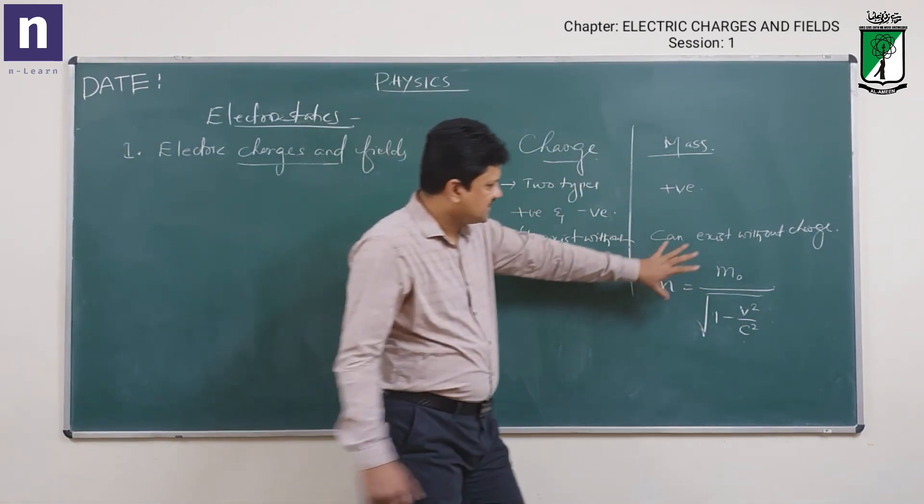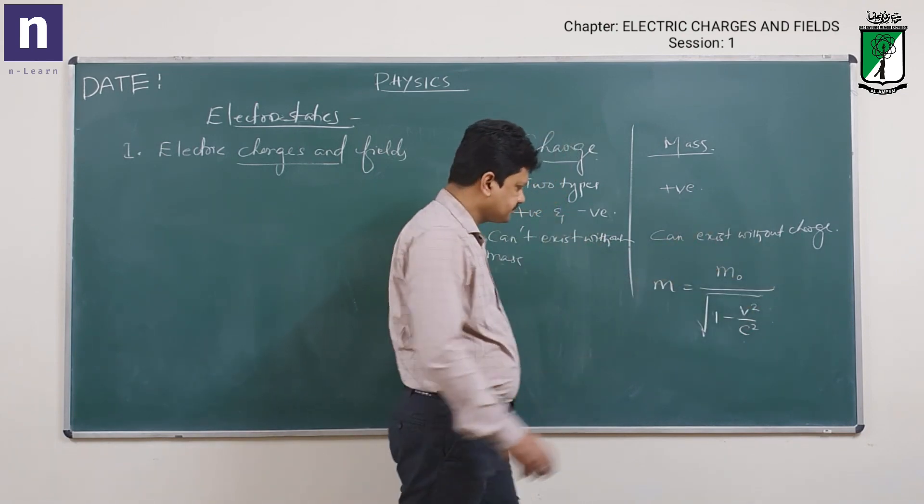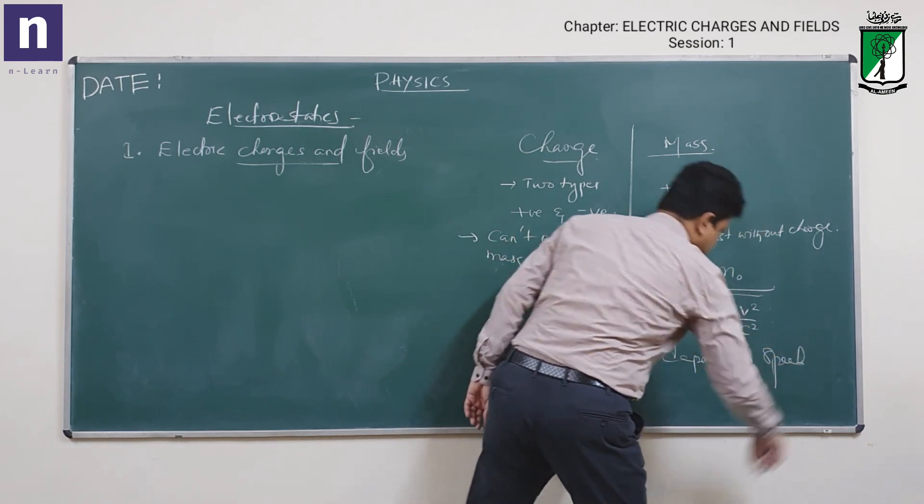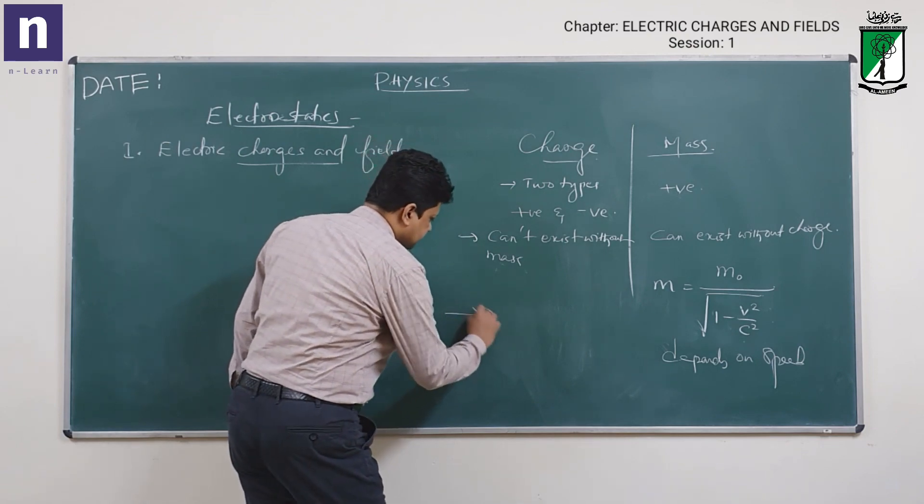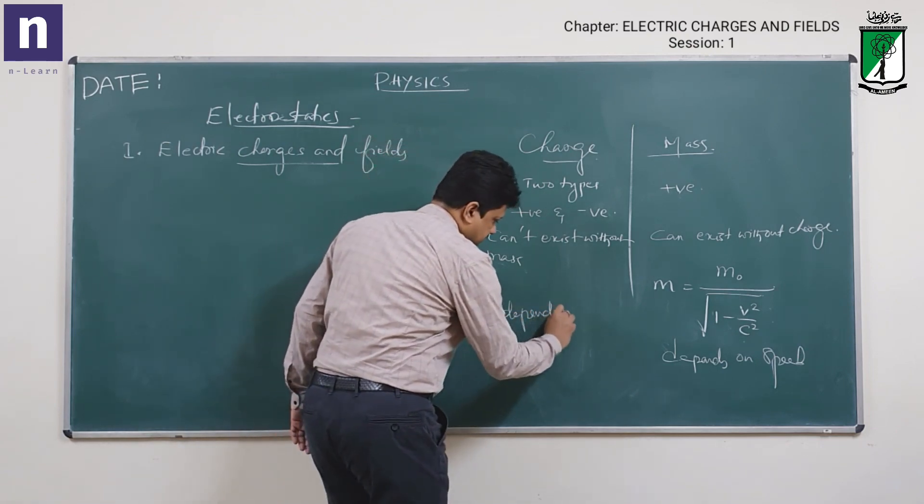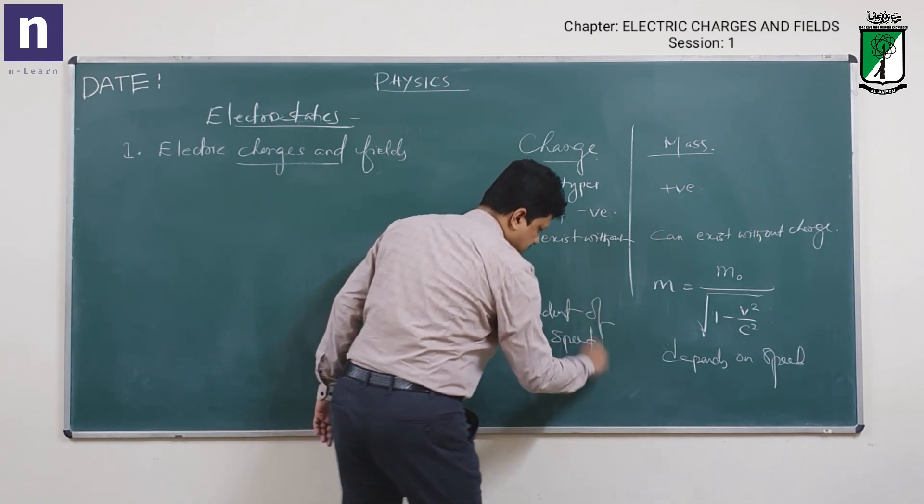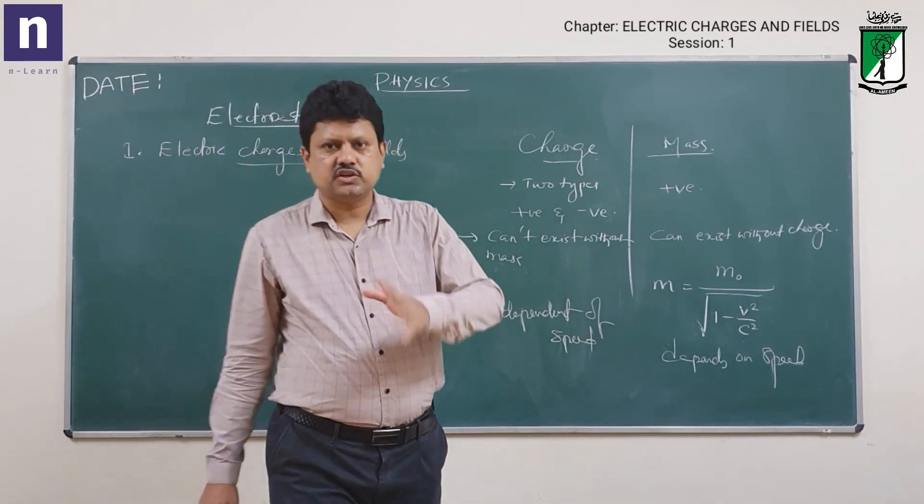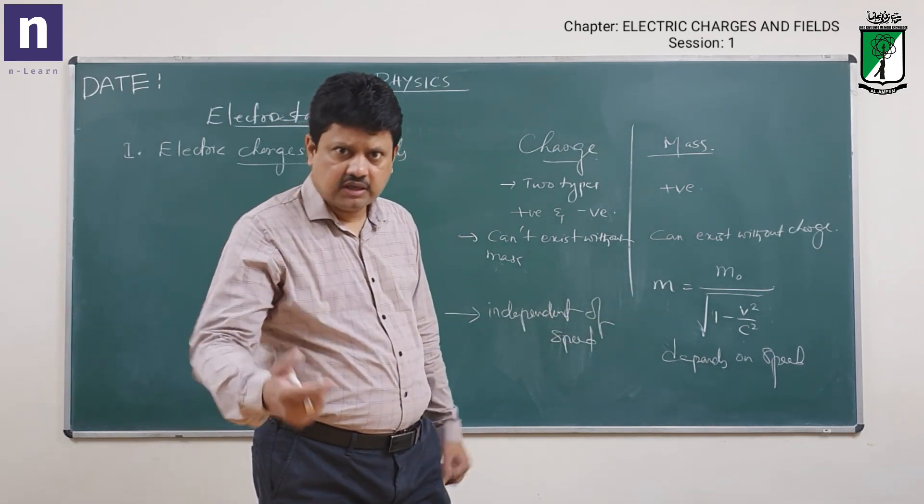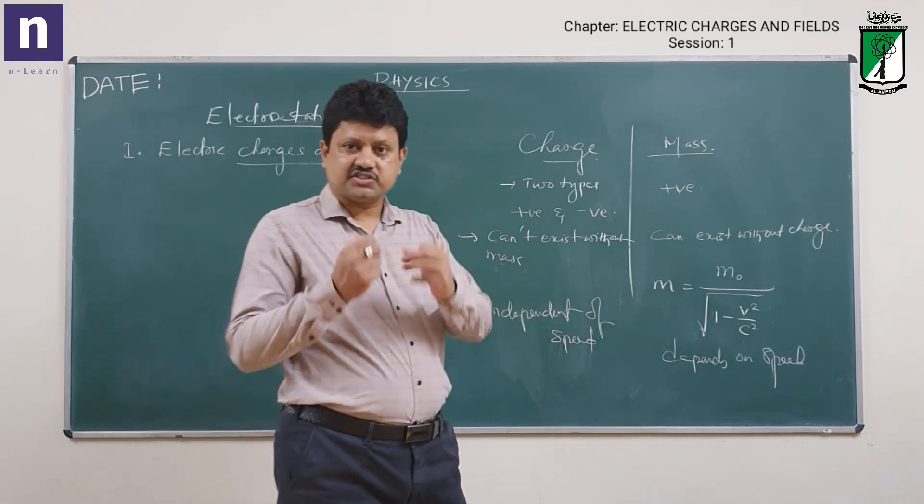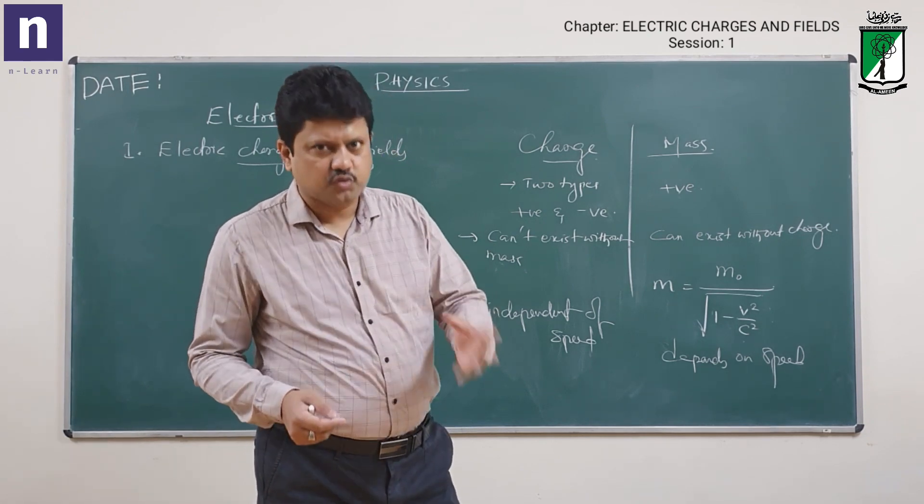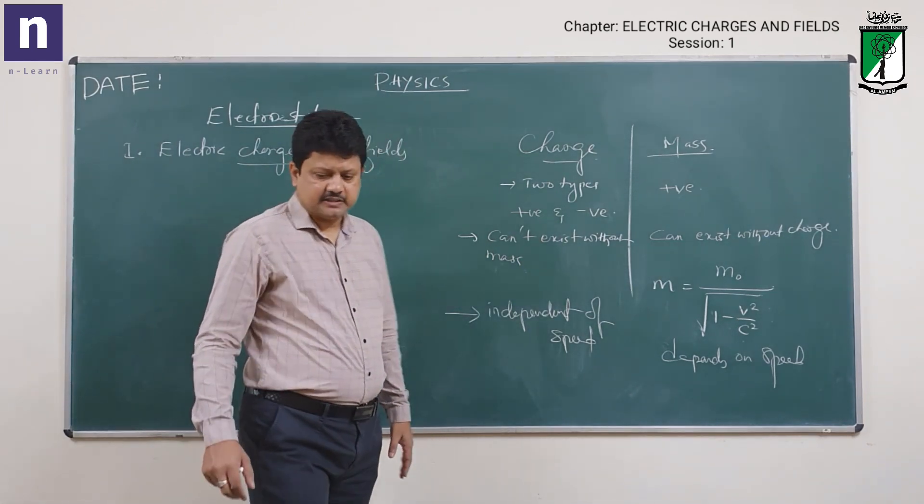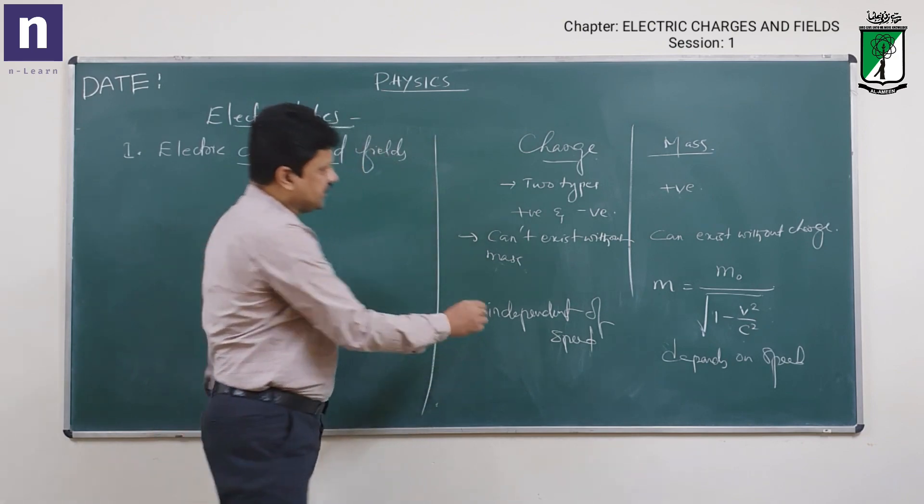So mass is relativistic, mass depends on speed. What about charge? It is independent of speed. The charge has some quantity, and that quantity will not change whether it is at rest or moving. There is an electron with a charge, and that charge quantity remains the same whether the electron is at rest, moving, or with whatever speed it is moving. Charge is independent of speed. These are the important characteristics and differences between charge and mass.